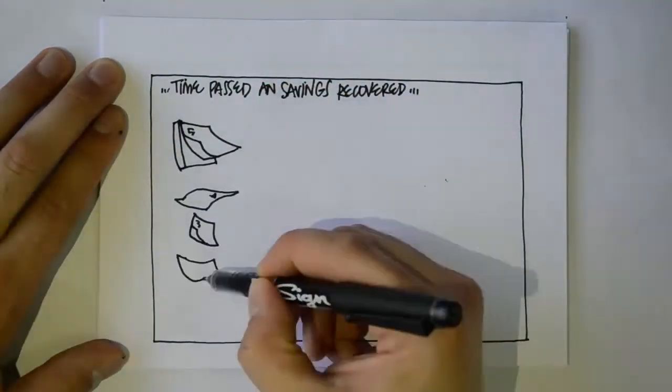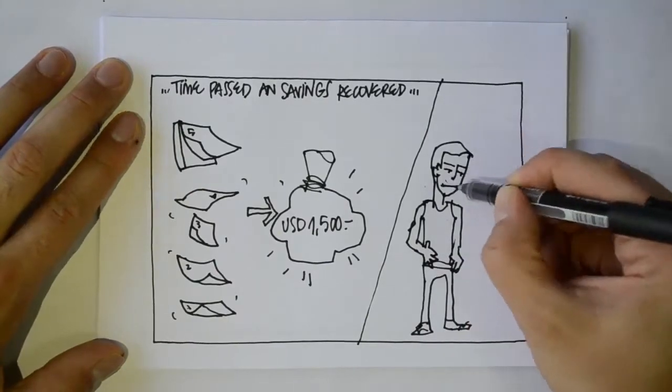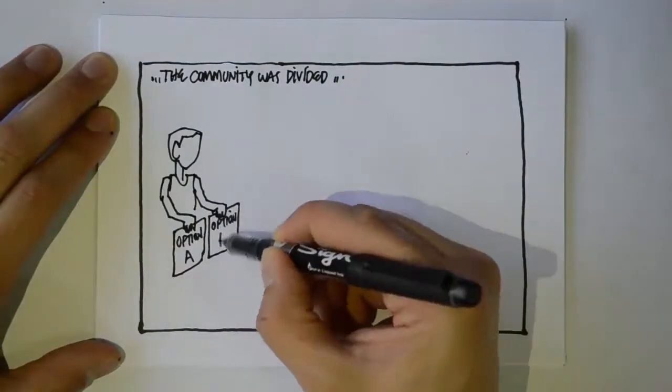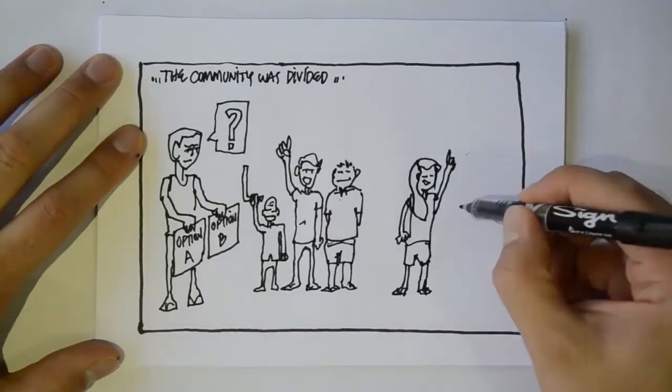After some time, the community savings had risen to $1,500 and they had to decide how to use the money. We should use this to get a loan. No, I think we should just spend it on a small project. I don't want a loan.